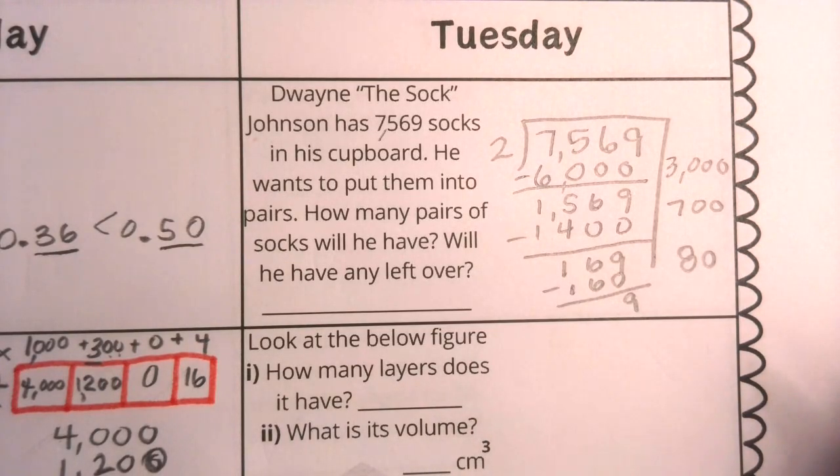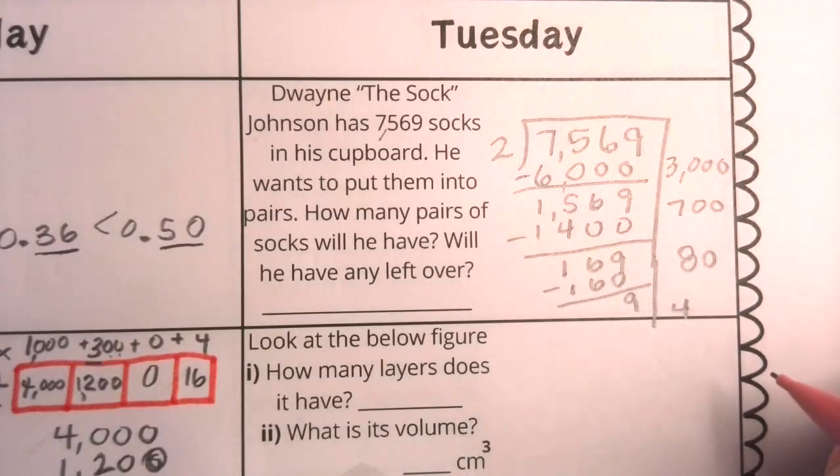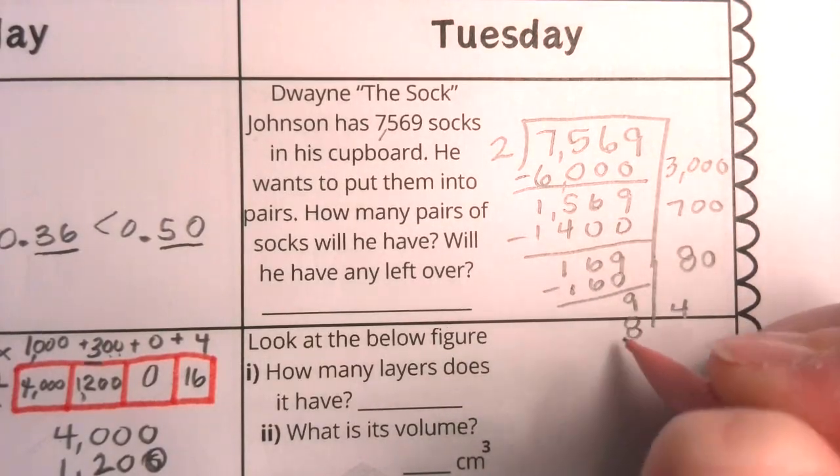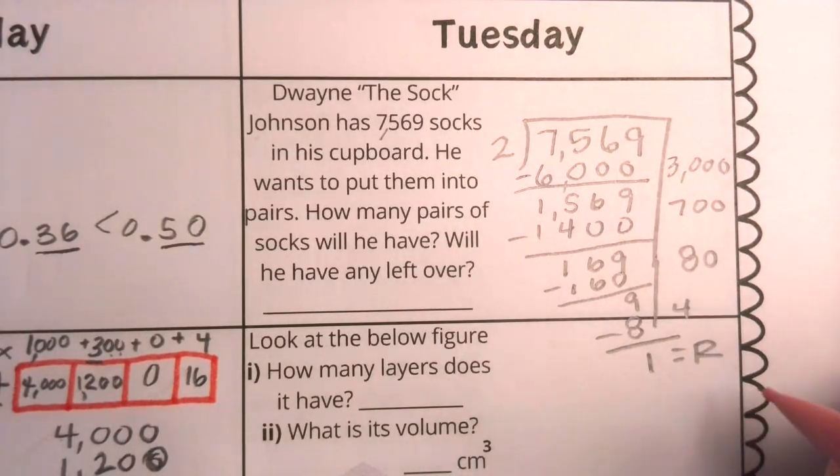Well, I can't make an even number of socks from that because I would need an even number. But here, I could go ahead and do 4 more pairs. 4 times 2 is 8, and when I subtract, I do find that I have a remainder of 1.